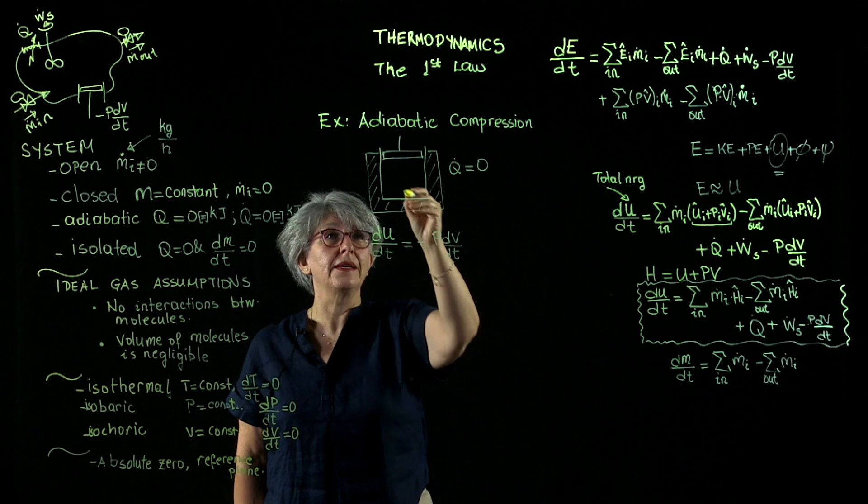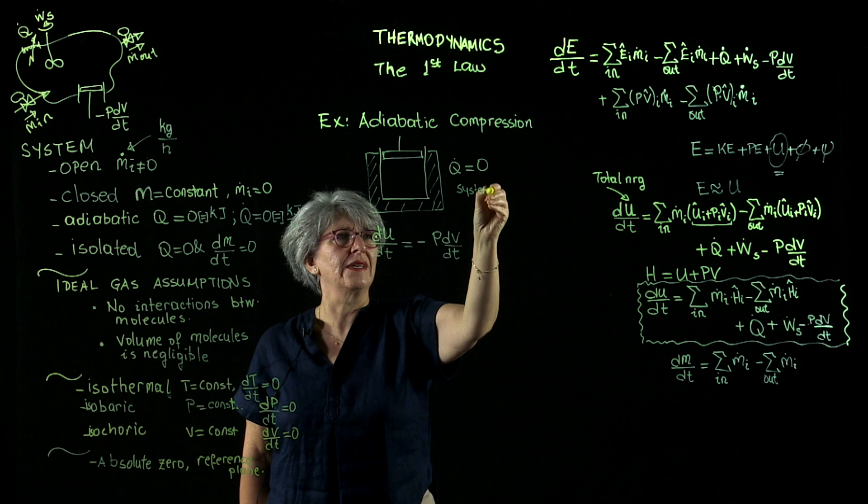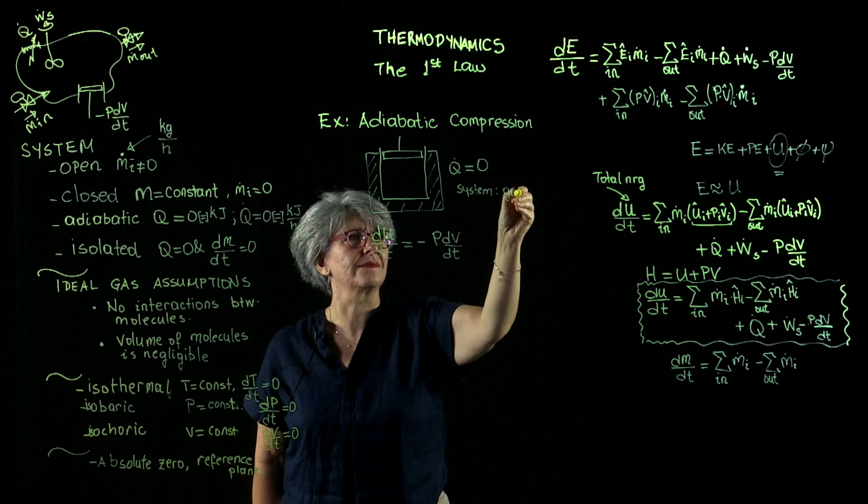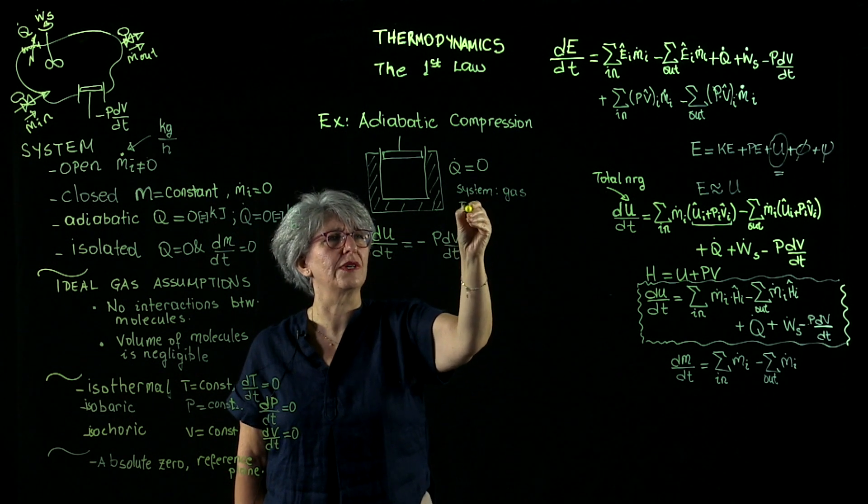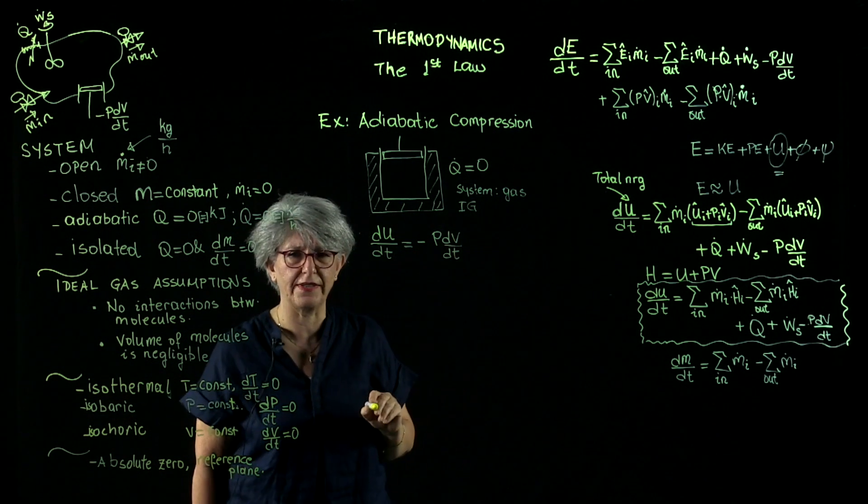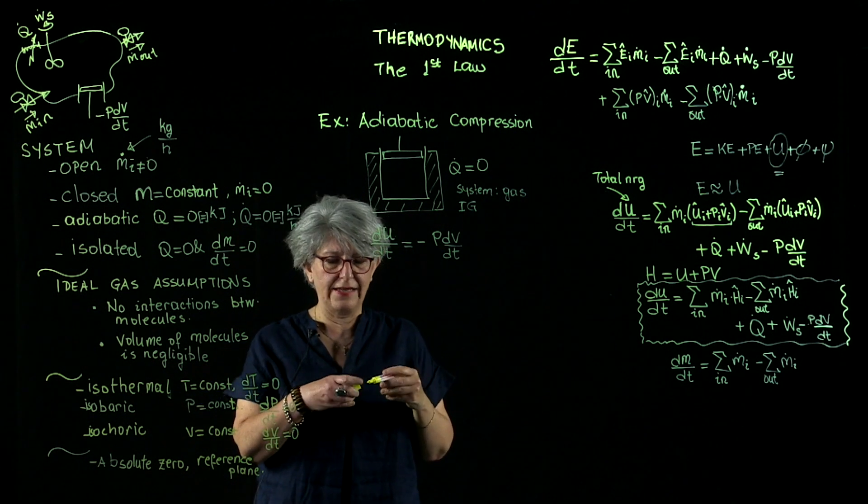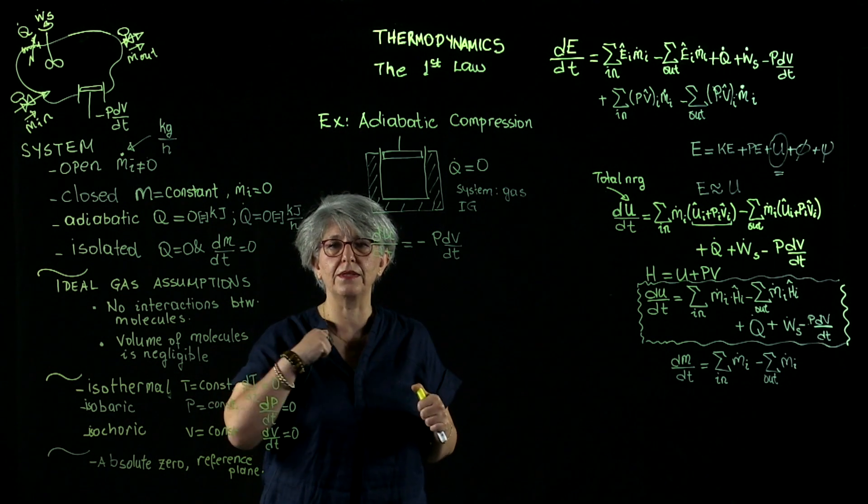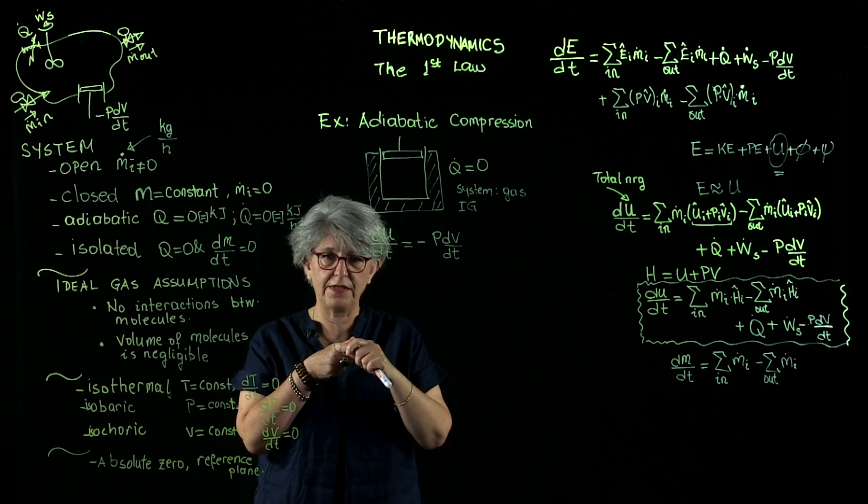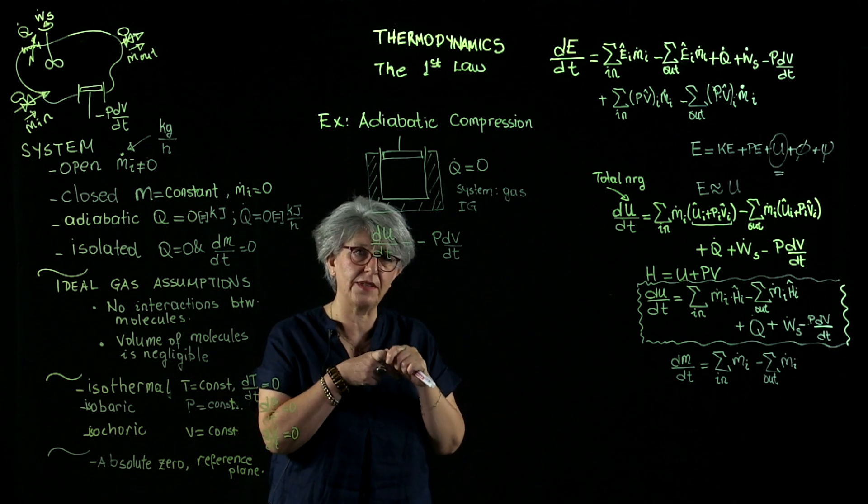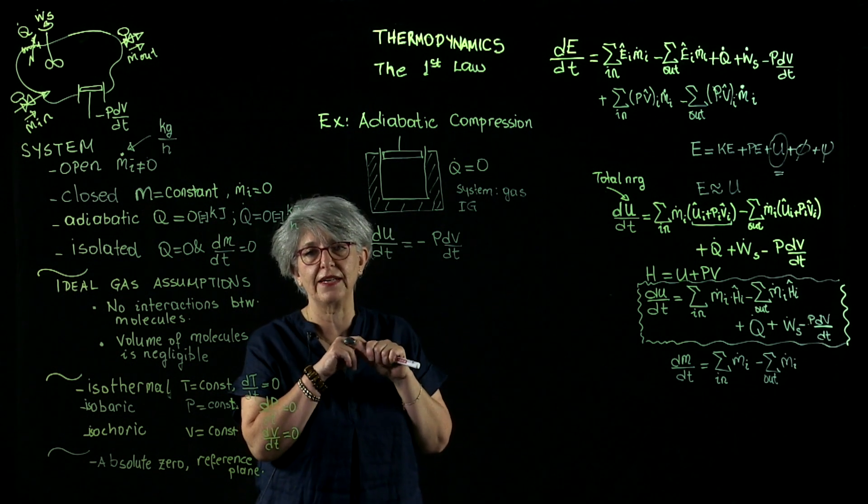Again, my system is the gas. My gas is an ideal gas. I will call IG to reflect ideal gas. And when I say ideal gas, I can use all the equations that are pertinent to the ideal gas. The equation of state, PV is equal to nRT, and the relationship between the internal energy of an ideal gas and its temperature.